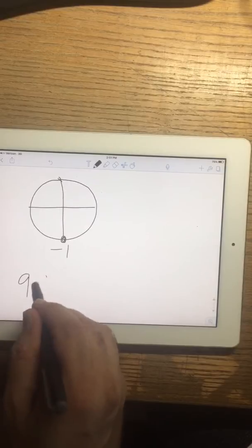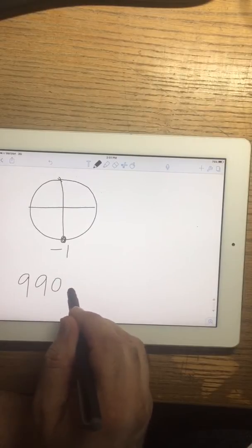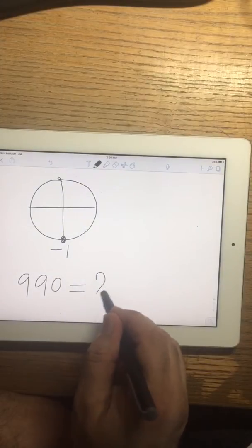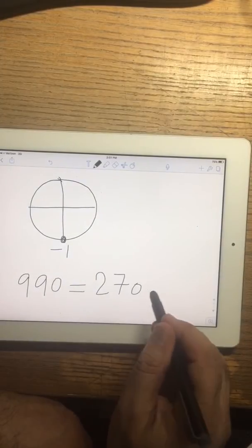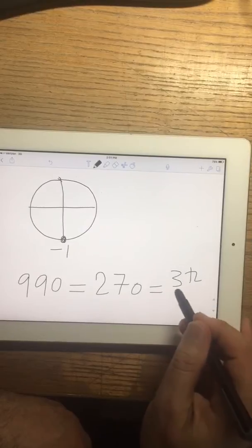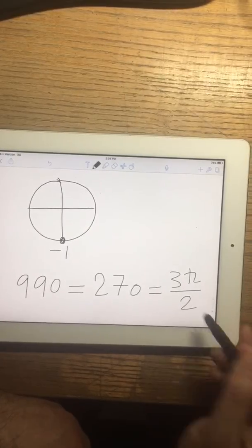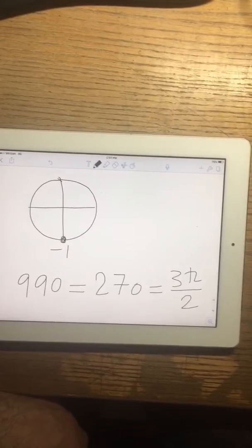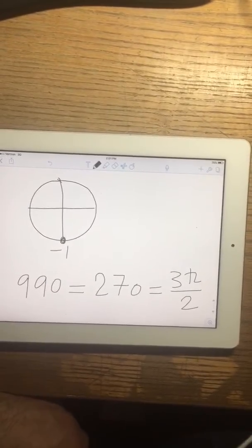So 990 degrees is the same as 270, which is 3 pi over 2. Now why are these the same number? Here is the reason.